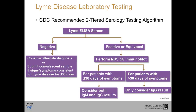For diagnosis, if the classic rash is not present, the CDC-recommended approach is the two-tiered serology testing algorithm. As shown on screen, this starts with an ELISA — an enzyme-linked immunosorbent assay testing for antibodies to Lyme disease. If positive or equivocal, a confirmatory immunoblot is performed looking for IgM and IgG class antibodies. This approach has some limitations — antibodies aren't often detectable in the first week of illness — but it is a good standard method for diagnosis.